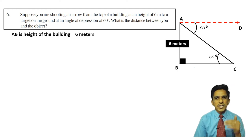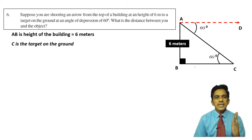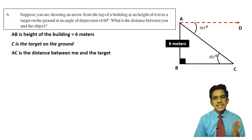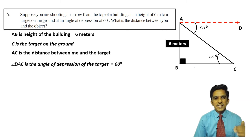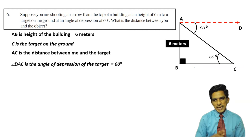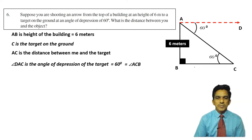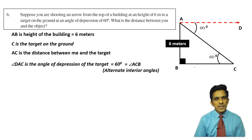Let us write what is given. AB is the height of the building: 6 meters. C is the target on the ground. AC is the distance between me and the target. Angle DAC is the angle of depression of the target on the ground. This angle is equal to angle ACB because they are alternate and interior angles.